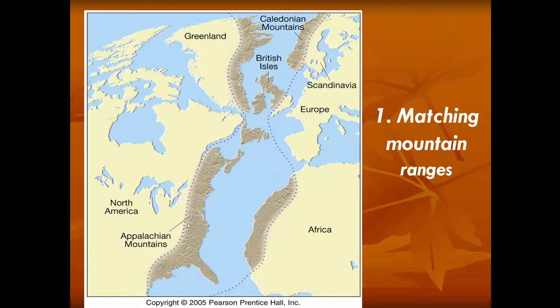When Pangaea began to break apart about 200 million years ago, there was one continuous chain of mountains where North America had collided with Africa and parts of Scandinavia. The rocks in these mountains, even though they have been pulled literally on opposite sides of an ocean, have been radioactively dated to be the same age and are actually the same exact rock type on either side of the Atlantic. Those mountains include the Appalachian Mountains, the Atlas Mountains in northwestern Africa, and the Caledonian Mountains in the British Isles, Scandinavia, and parts of Greenland.